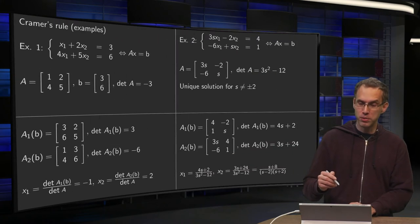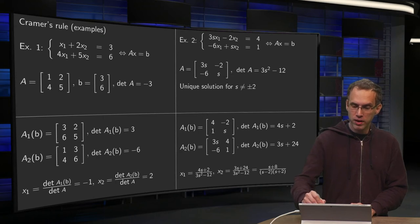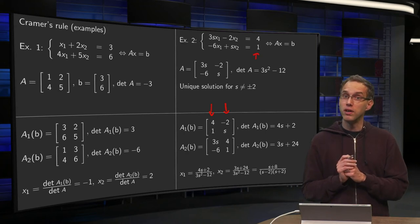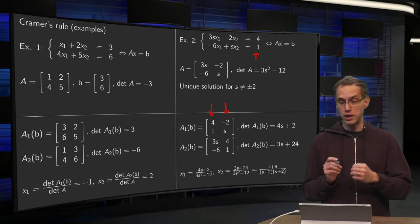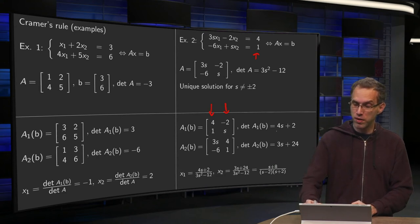Well, again, we compute A1(b). So what do we do? We keep the second column the same and put at first column b, which is 4, 1. And then we compute our determinant. 4 times S minus minus 2 times 1, 4S plus 2. So that's the determinant of A1(b).